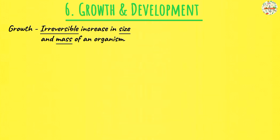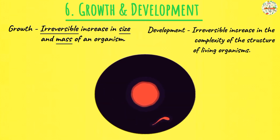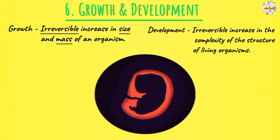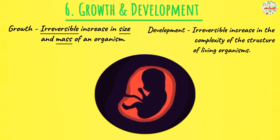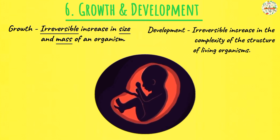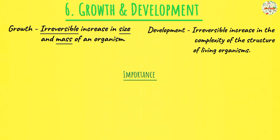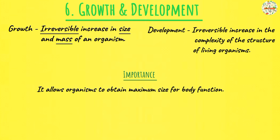Development is defined as an irreversible, permanent change in the complexity of the structure of living organisms. Growth is usually accompanied by development. In development, organisms become more complex as they progress. For example, all humans initially started out as a zygote — a fertilized egg — then developed to form an embryo, a fetus, until finally a baby and a toddler. The organisms are growing and developing, moving from simple structures to more complex ones. Development is important because it allows the organisms to obtain maximum size to perform their body functions.